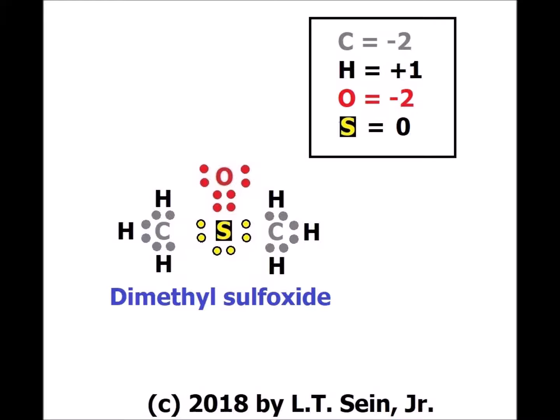The situation for carbon and hydrogen in DMSO is exactly the same as seen previously for methyl groups. Oxygen started with 6 electrons and has 8 counting towards it, so it has an oxidation number of −2.